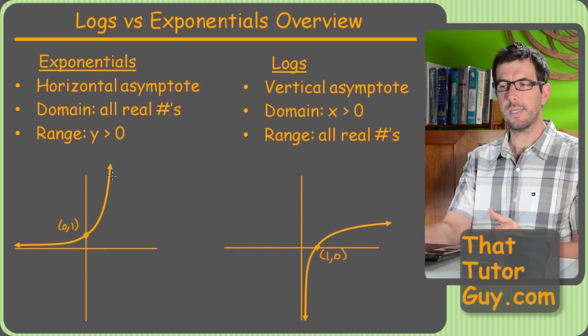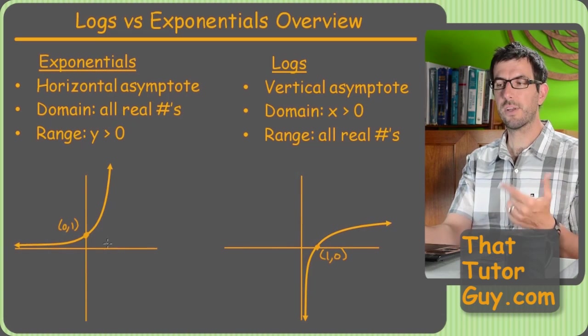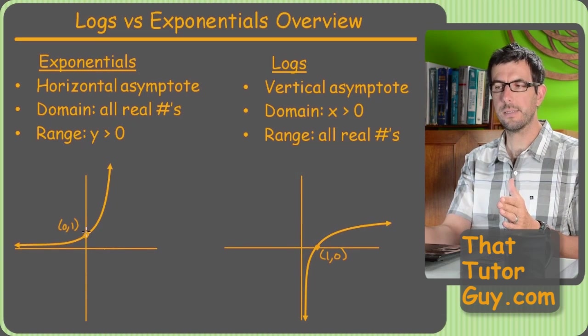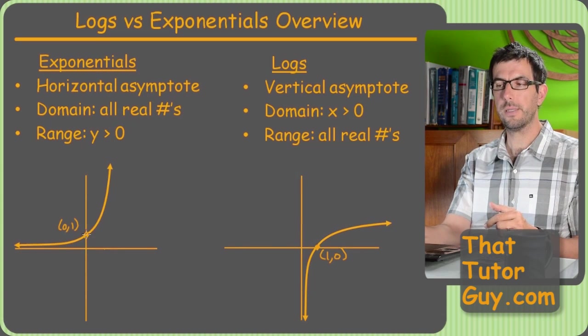But the funny thing is that these each only have one intercept. The exponential, since it comes in along the x-axis with a horizontal asymptote, it's never going to hit anything but the y-axis. So just know that whenever one of these things crosses an axis, it should be at 1, unless there's some kind of shift.